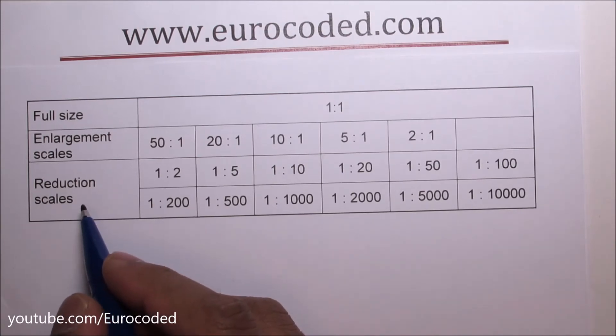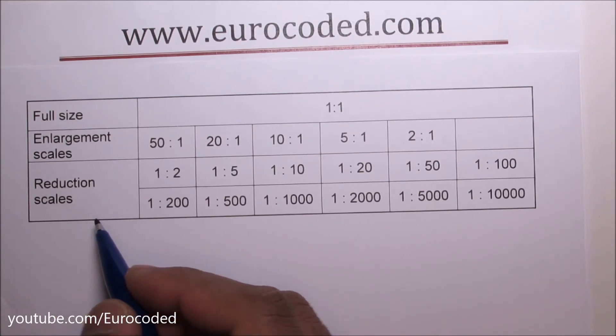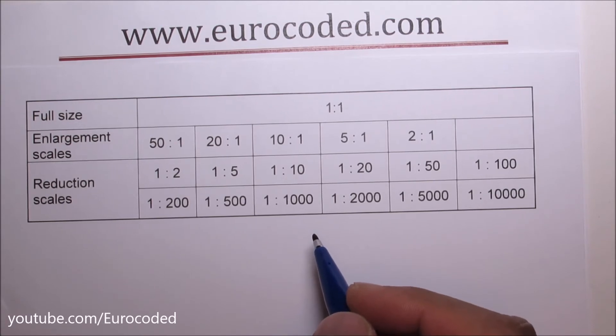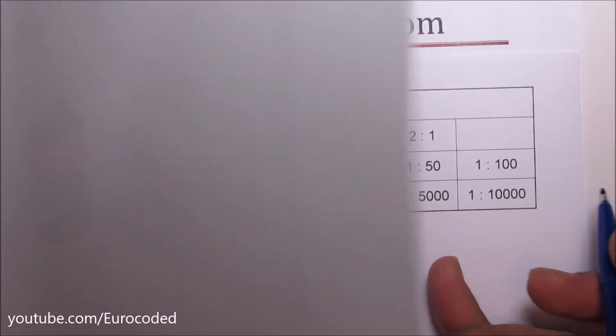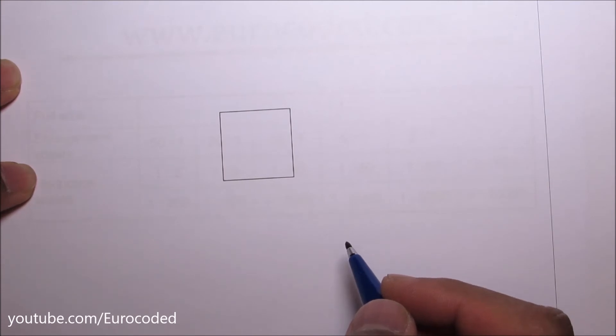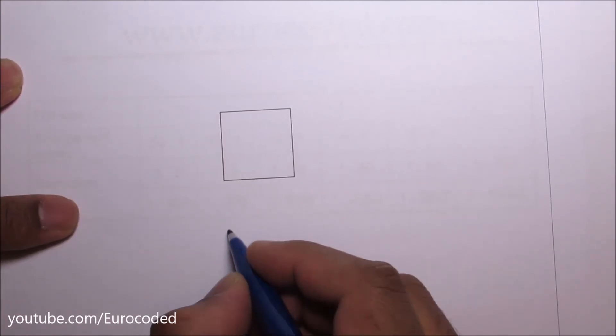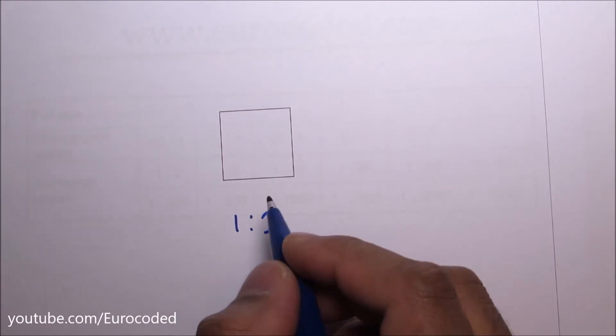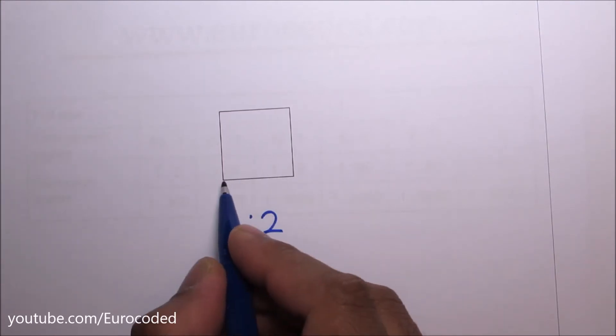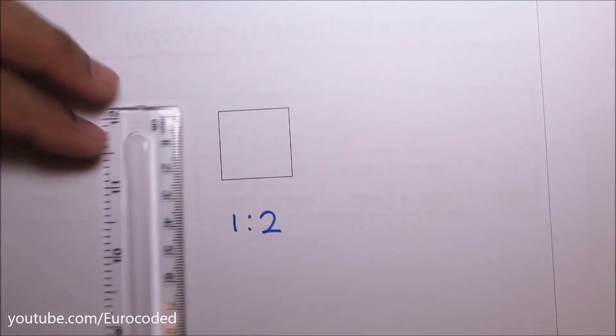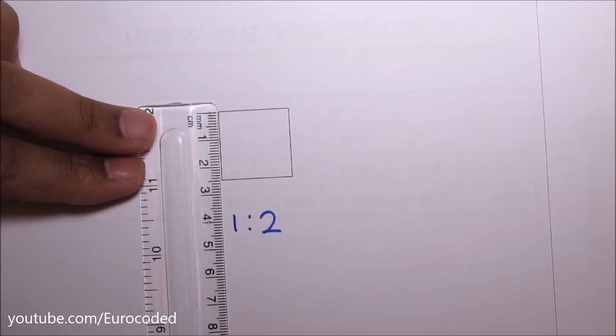The third type is reduction scales. In this case we are reducing the size on the drawing by using a reduction scale. This is the same element we looked at before but drawn to one to two scale. If it is drawn correctly each leg should be two and half centimeters. You can see that this leg is two and half centimeters.